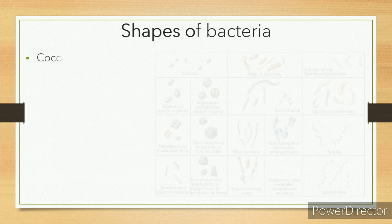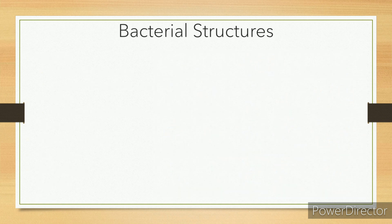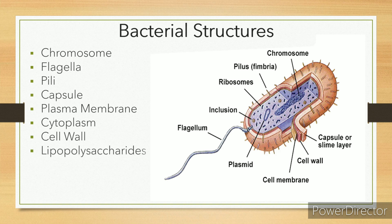Shapes of bacteria. Bacteria can be in the following shapes: Coccus, Chain streptococcus, Cluster staphylococcus, Bacillus, Chain streptobacillus, Coccobacillus, Vibrio, Spirillum, Spirochete, Square, Star.